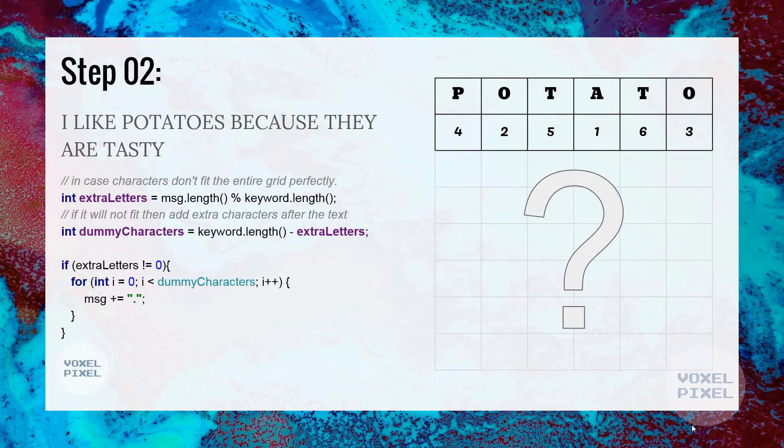Next, we will check if our plain text fits perfectly into a grid. We will calculate grid size in the next step but here, to check if our plain text will fit into the grid, we will take modulus between length of the message and keyword length. If our modulus returns 0, then it will fit perfectly. Otherwise, we will append extra dummy characters at the end of the message.